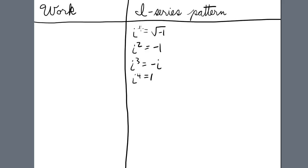So we already know the i series pattern for the first four powers of i. We're going to take i to the fourth equals 1, and multiply both sides by i. So now we have i to the fifth equals i.